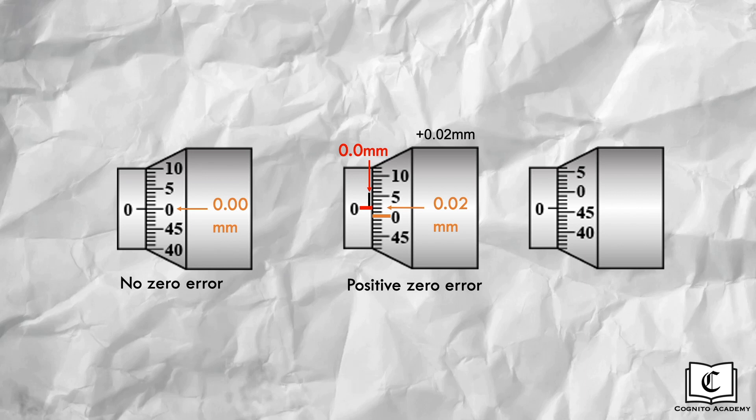In the last reading, the zero marking on the timbre scale is above that of the red datum line. Hence, that is a negative zero error. For negative zero errors, we read the timbre scale backwards just like what we do for vernier calipers. Hence, instead of reading 0.46 mm on the timbre scale, reading it backwards will give 0.04 mm instead. Hence, the zero error is negative 0.04 mm.